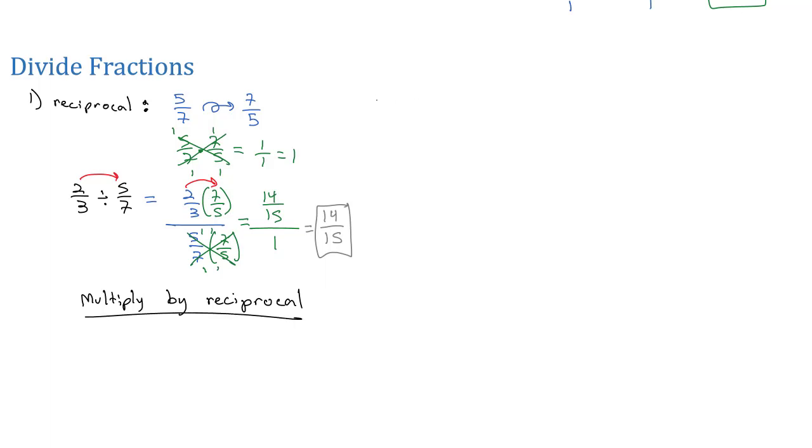So, let's do some examples. Let's try 14 fifteenths divided by 35 sixths. Well, we're never actually going to divide. We're going to take the 14 fifteenths and multiply by the reciprocal of 6 over 35.